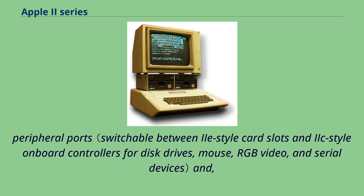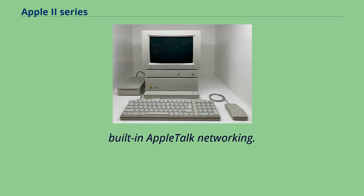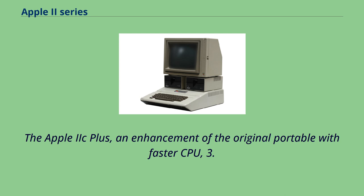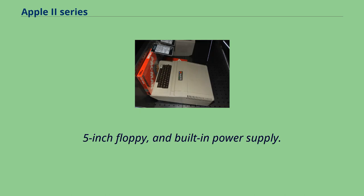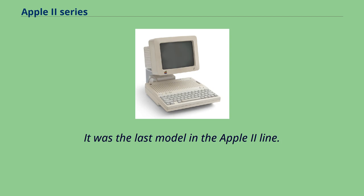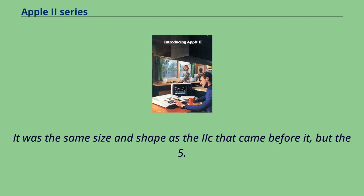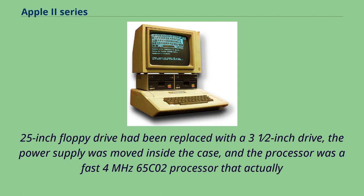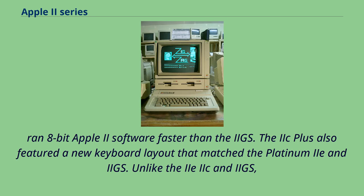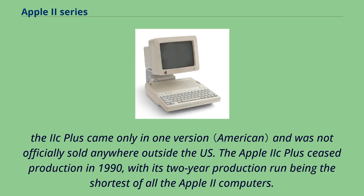The Apple IIc Plus, an enhancement of the original portable with a faster CPU, a 3.5-inch floppy, and a built-in power supply, was the last model in the Apple II line, introduced in 1988. It was the same size and shape as the IIc, but the 5.25-inch floppy drive had been replaced with a 3.5-inch drive, the power supply was moved inside the case, and the processor was a fast 4 MHz 65C02 that ran 8-bit Apple II software faster. The IIc Plus ceased production in 1990, with its two-year production run being the shortest of all Apple II computers.